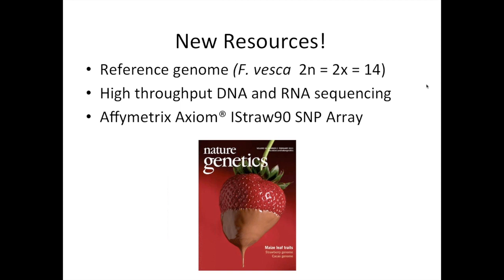Thankfully we have some new resources that have really jump-started applications of genomics to breeding in strawberry. The first was the 2011 publication of the strawberry reference genome, which is Fragaria vesca, a diploid ancestor of the current octoploid strawberry. Also, high-throughput DNA and RNA sequencing technologies continue to become cheaper and better. Today I will give you an example of what we've done with RNA sequencing. Finally, the development of high-throughput whole-genome genotyping platforms, such as the Axiom array that I'll be talking about today.